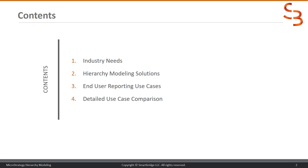I'll take you through four sections. First, I'll talk about what the industry needs are that propelled us to make this a proof of concept and implement this solution. Then we'll go through the hierarchy models and the different kinds we can handle in MicroStrategy. We'll also look at some end-user use cases — reporting and dashboards — and then we'll go into a comparison of the different methods to get an overview of what we're looking at.